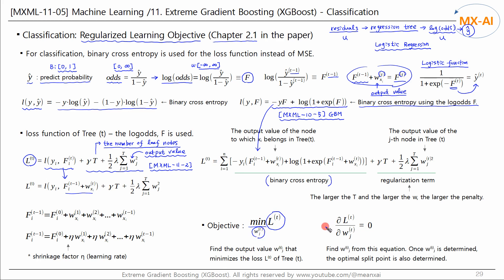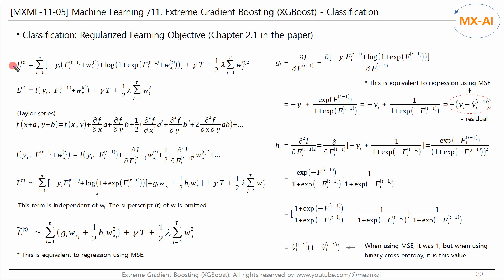By differentiating this objective function with respect to w, we can find the optimal w. The first sigma is expressed based on data point number i, and the second sigma is based on leaf node number j, so w appears differently in this formula. To differentiate with respect to w, we need to convert both expressions to w. Since this equation is difficult to solve, let's approximate it using a Taylor series. The Taylor series for a two-variable function f(x, y) is as follows.